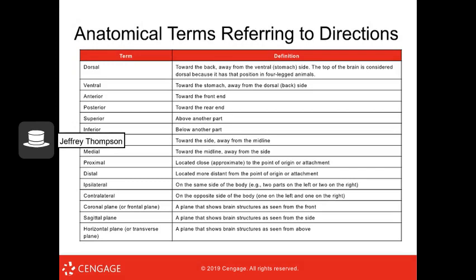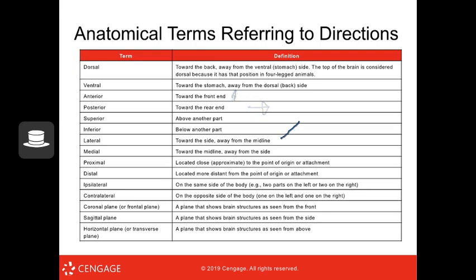Here are those terms again with some new ones. Dorsal and ventral — remember the dolphin. Anterior means toward the front, posterior toward the back. Superior means above something, inferior means below. Lateral is closer to the side, medial is closer to the middle. Proximal means located close to something, distal means located further away. Ipsilateral means on the same side as something; contralateral means on the opposite side. And we have our coronal, sagittal, and horizontal planes.